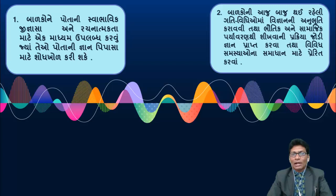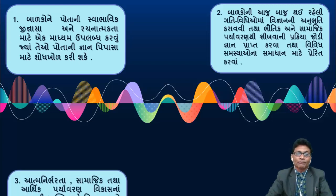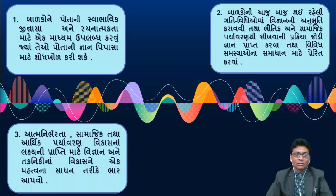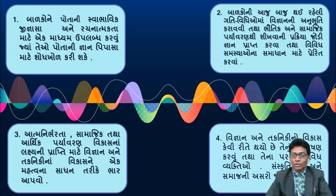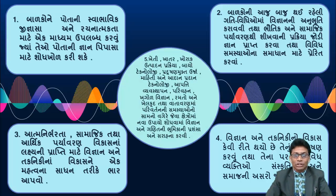Number 2, Number 3, Number 5 - Kheti, Khathor, Khorak, Uttpaden, Prakliya, Bio Technology, Production, URJ, Mahiti and Adan-Pradan Technology.